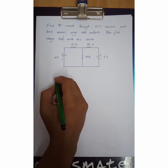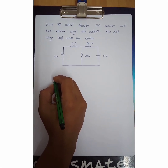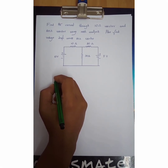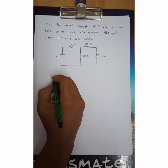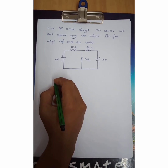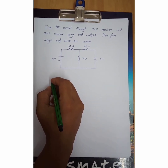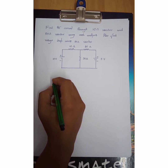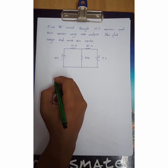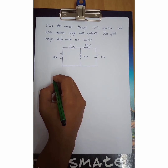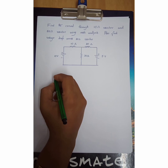Hi everyone. In this session on mesh analysis, I have selected a two-loop circuit. The problem is to find the current through the 10 ohm resistor and 20 ohm resistor using mesh analysis, and also find the voltage drop across the 20 ohm resistor.